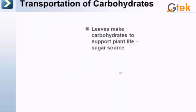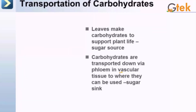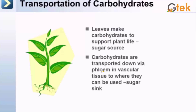Now we are going to see the transportation of carbohydrates. The leaf makes carbohydrates, and carbohydrates are transported downward via the phloem. It can be used as a sugar sink, as shown here.